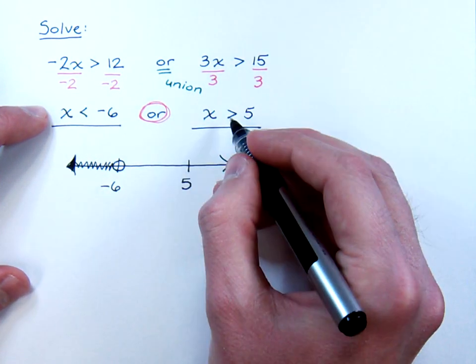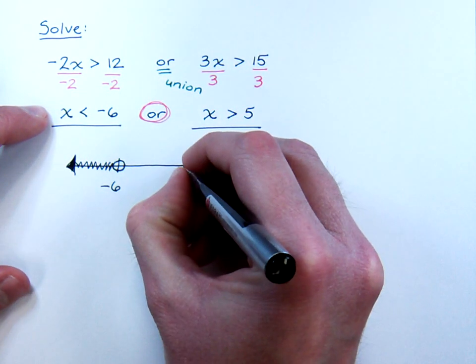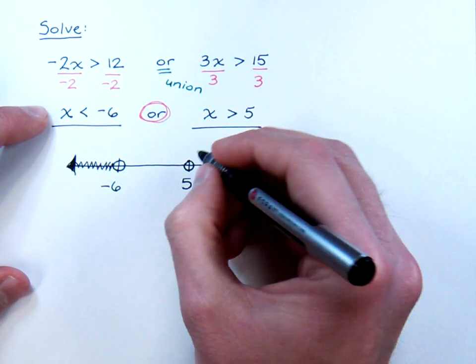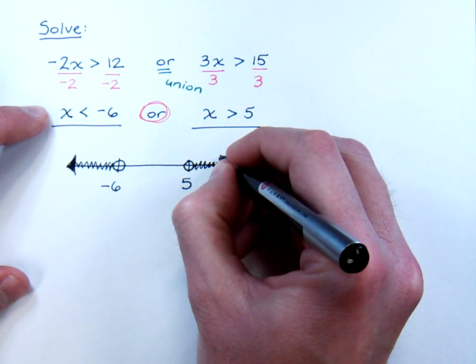The other inequality is x is greater than 5, so since it's not equal to, that again will be an open circle. And greater than is coming out to the right.